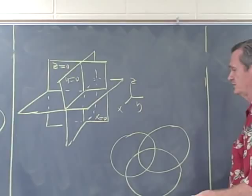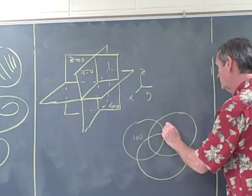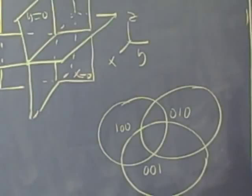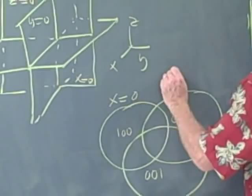This will be the point one, zero, zero. This will be the point zero, one, zero, and this will be the point zero, zero, one. And so this is the x equal zero plane, this is the y equal zero plane, and this is the z equal zero plane, or rather the boundary of those discs as we're drawing them that way.